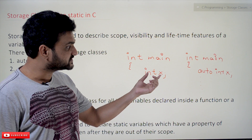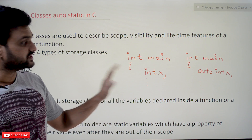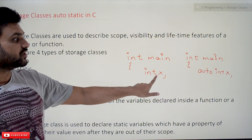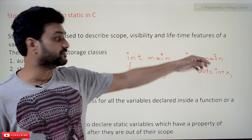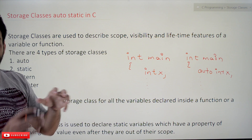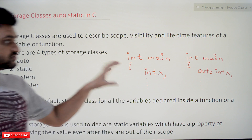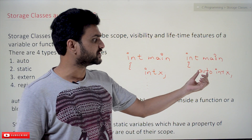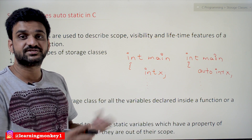Whenever we declare int X or auto int X, both are of the same type — both declarations make no difference. The existence of this variable is block scope, and declaring a variable with auto (auto int X) is also having block scope. By default, every variable is of type auto, meaning after completing the function those variables will automatically die. Most probably we don't use the auto keyword because a plain variable declaration and auto int X are the same.